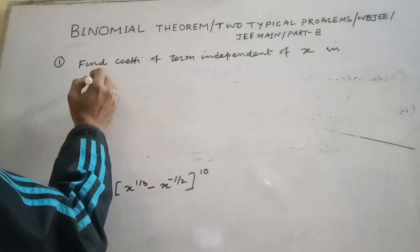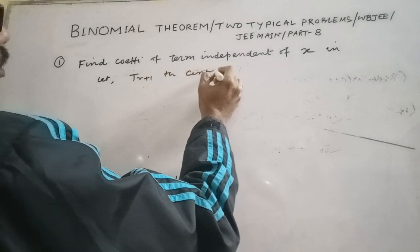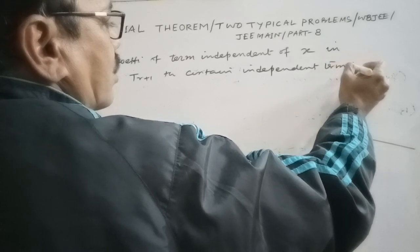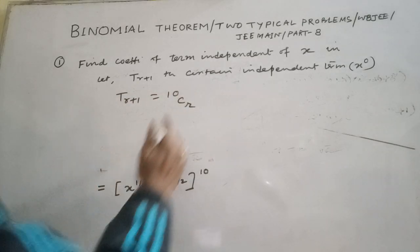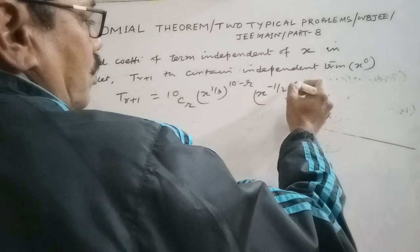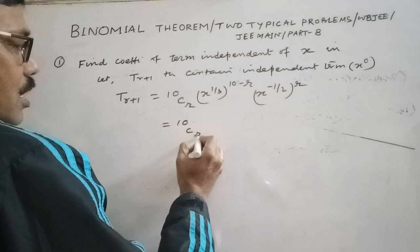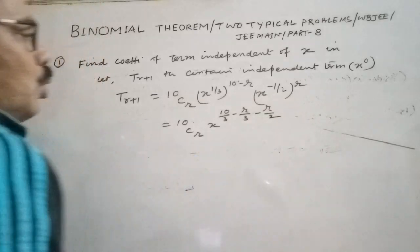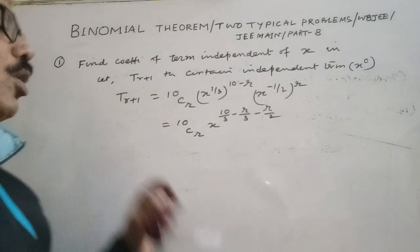Let T(r+1) be the term containing the independent term (not involving x). For (x^(1/3) - x^(-1/2))^10, we have T(r+1) = 10Cr · (x^(1/3))^(10-r) · (-x^(-1/2))^r = (-1)^r · 10Cr · x^(10/3 - r/3 - r/2).